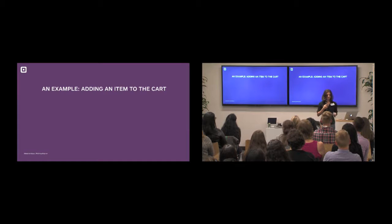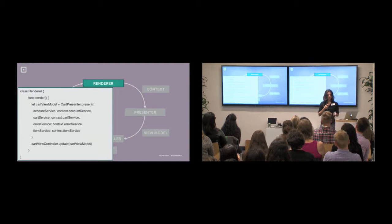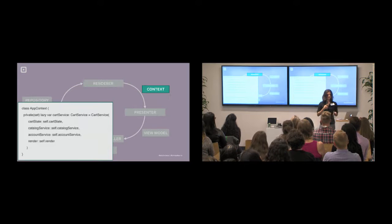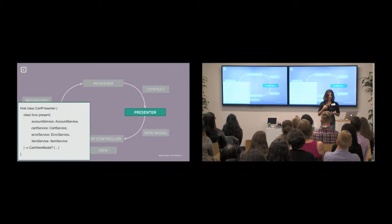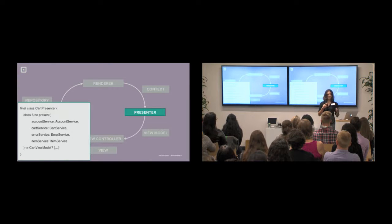Let's go through an example. We start out with a renderer, which has a render function that calls the cartPresenter to present. The cartPresenter takes in a couple of different pieces from the context, such as the catalog service, the cart service, et cetera. Then the cartPresenter has a present function which takes the account service et cetera, and returns an immutable struct — the cartViewModel.